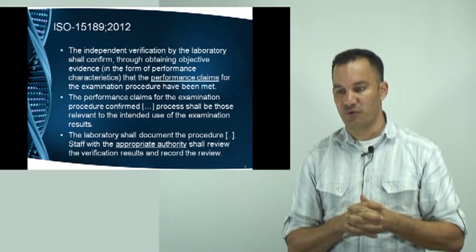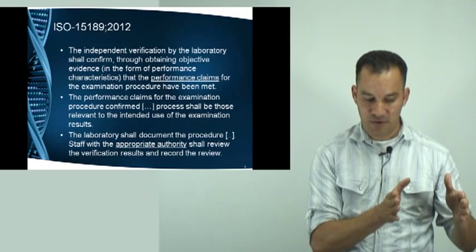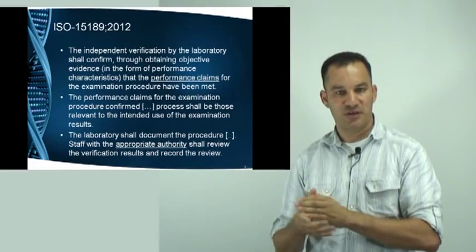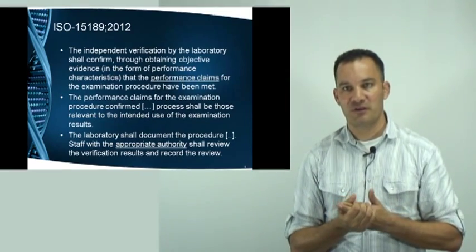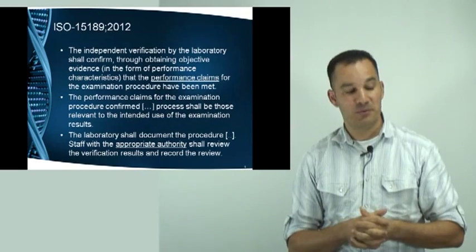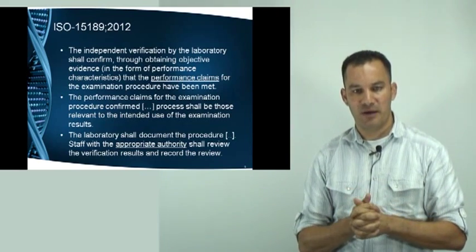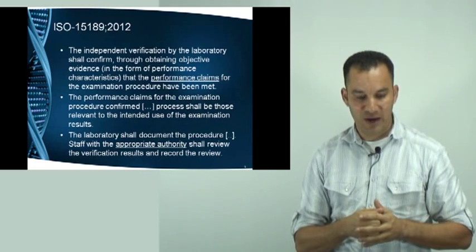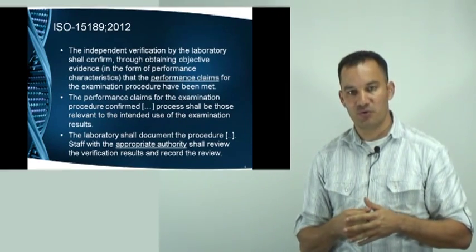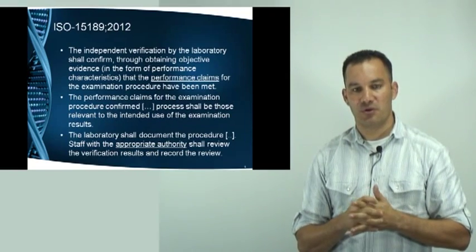If a method is on the market for measuring something in a specific concentration range and we start doing experiments in a completely different concentration area, those validation experiments are not relevant to the intended use of that procedure. We must also document everything we have done, as auditors visiting your laboratory will require information about all the validations performed in the past one, two, or three years, depending on the audit schedule.